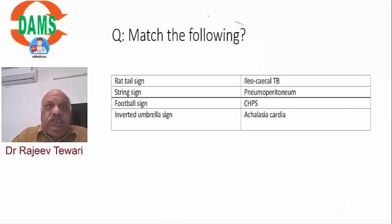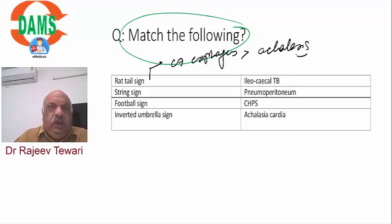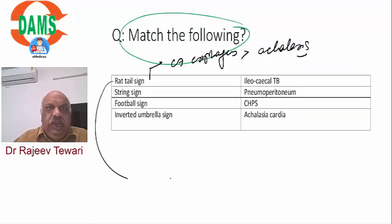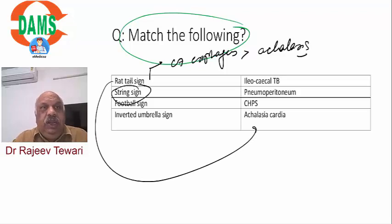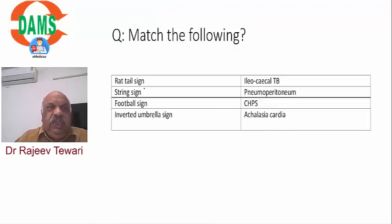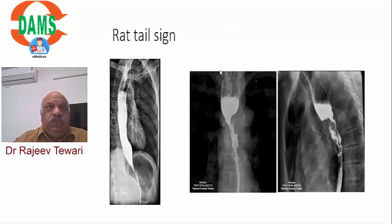Match the following: Rat tail sign is seen in carcinoma of the esophagus, or rarely in achalasia - but in achalasia it is smooth (bird beak sign), while in carcinoma it is irregular and serrated with filling defects. String sign is seen in tuberculosis, and also in hypertrophic pyloric stenosis (string sign of Canton or Crohn's). Football sign is for pneumoperitoneum. Inverted V sign (Frischioni sign) is a sign of ileocecal tuberculosis.